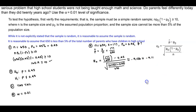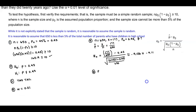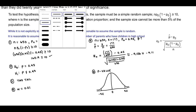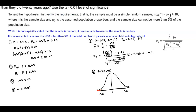Now let's find our p-value. It's important to draw our bell curve so we know what we're looking at. We have our mean at 0 and a test statistic of negative 9.11. Since it's a two-tail test, we also have a test statistic at positive 9.11. That means we are finding the area in both tails for our p-value.